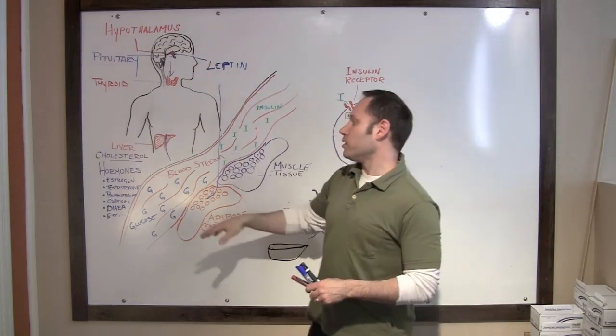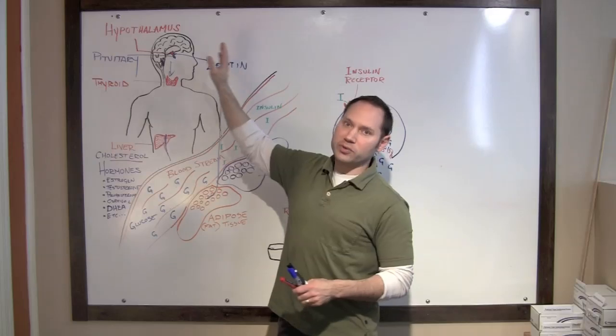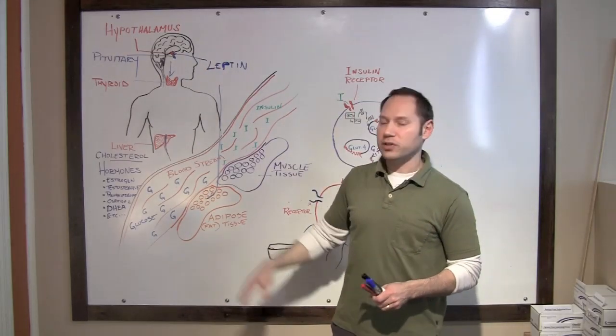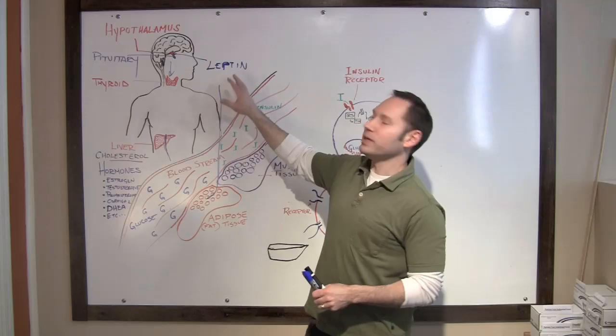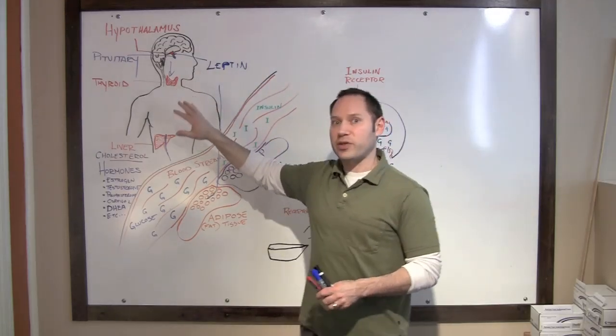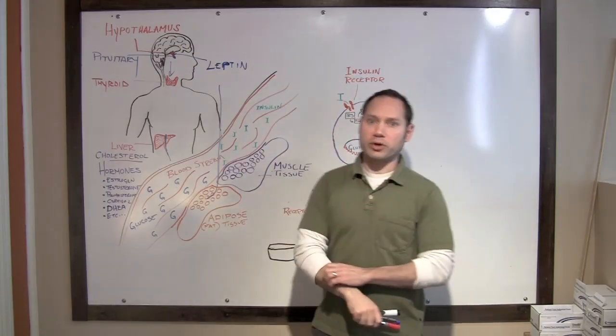That in turn can affect your brain, because the fat tissue produces a hormone called leptin. Leptin's job is to communicate with the brain that storage is good and nutrient status is good and we can stop eating for a while. But if that signal doesn't get to the brain, that in turn is going to send a signal to the thyroid to turn down your metabolism. We end up with this pretty bad situation.